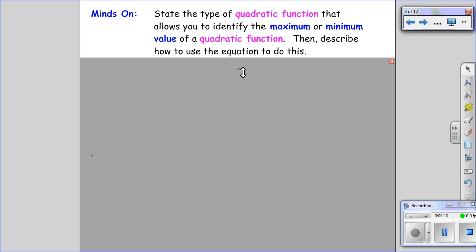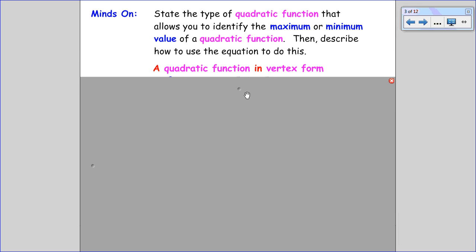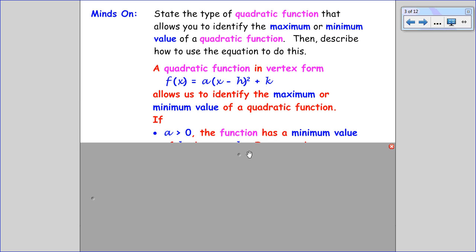Both vertex form and standard form will tell us if we have a maximum or minimum value. However, it's only vertex form that tells us what this value is and when it occurs. So if we consider the equation f(x) = a(x - h)² + k, if a is positive, we know we have a minimum value, the function opens up,